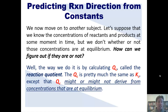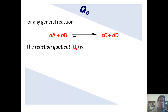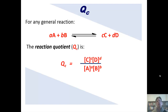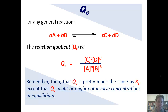QC is pretty much exactly the same as KC, except that QC may or may not derive from concentrations that are at equilibrium. For any general reaction, QC, the reaction quotient, is equal to this expression. You should note that QC looks exactly the same as KC, except that the concentrations C, D, A, and B might or might not be at equilibrium.